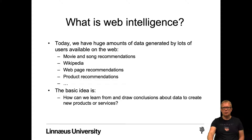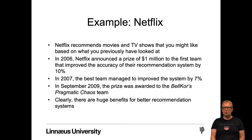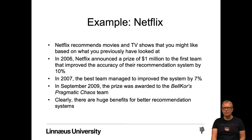One typical example is Netflix. Netflix recommends movies and TV shows that you might like based on what you previously have looked at. In 2006, Netflix announced a prize of $1 million to the first team that improved the accuracy of their recommendation system by 10%. In 2007, the best team managed to improve the system by 7%, and it was not until September 2009 that the prize was awarded to the BellKor's Pragmatic Chaos team. So clearly, there are huge benefits for better recommendation systems.